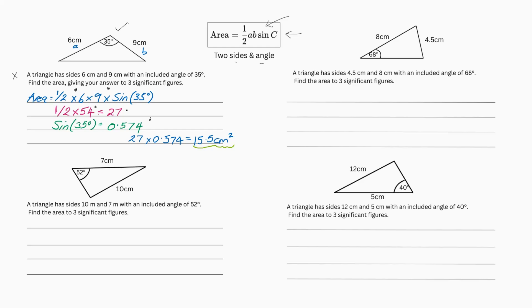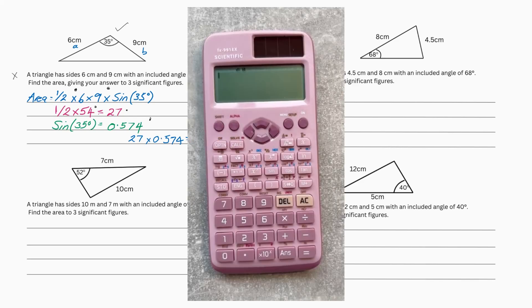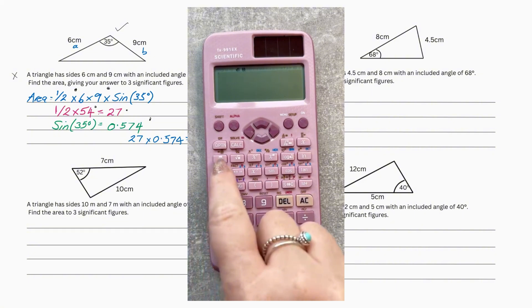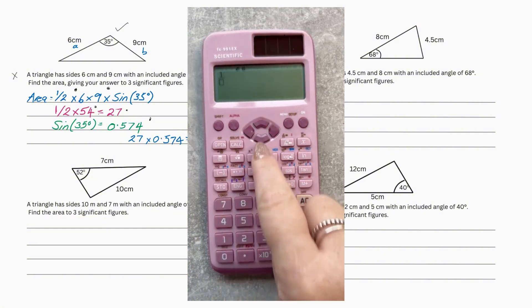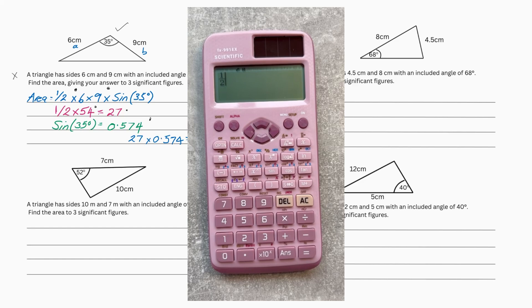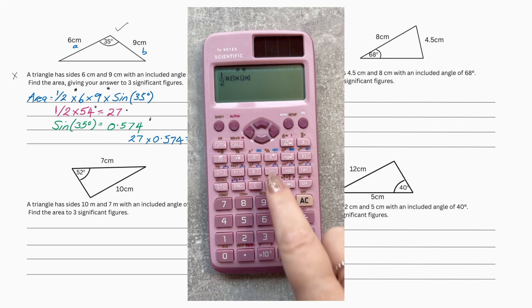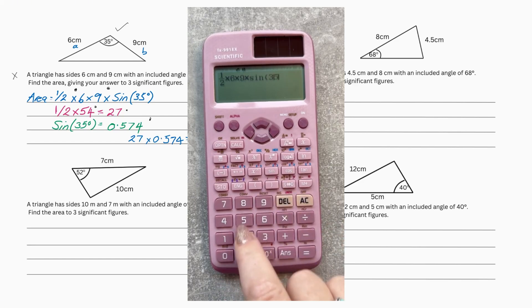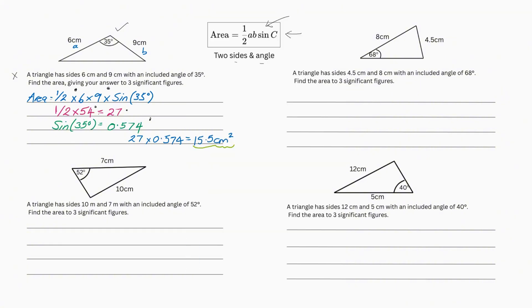Now, I've just broke it up. I've wrote the method of how I found the answer. You could, however, just put it straight into your calculator like this. And then you've got your answer.